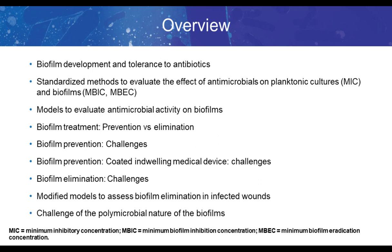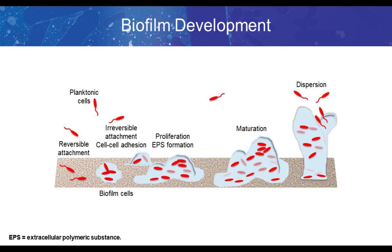Very quickly, the biofilm formation process is when planktonic cells attach to a surface — changing from reversible to irreversible attachment — and the bacteria grow and start forming the exopolysaccharide matrix. At the end, the biofilm develops into a well-developed mature biofilm, and from that biofilm, planktonic cells start dispersing. These cells will start an infection process elsewhere or go somewhere else and start a new biofilm.